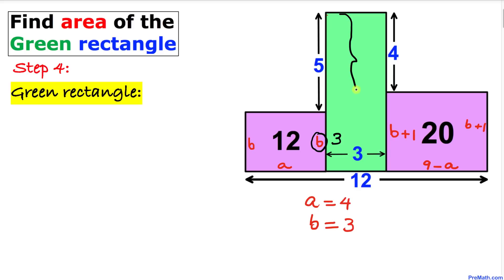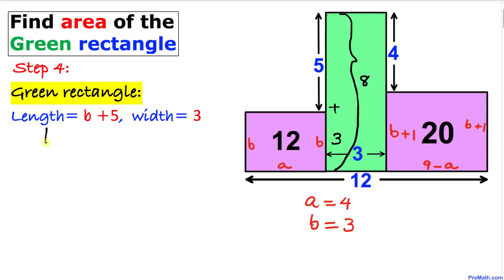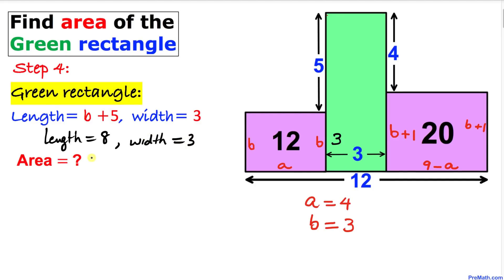Now let's focus on the green rectangle. The total height is 5 plus 3 — adding those gives us 8 units. So the length of the green rectangle is 8 units, and its width is simply 3.